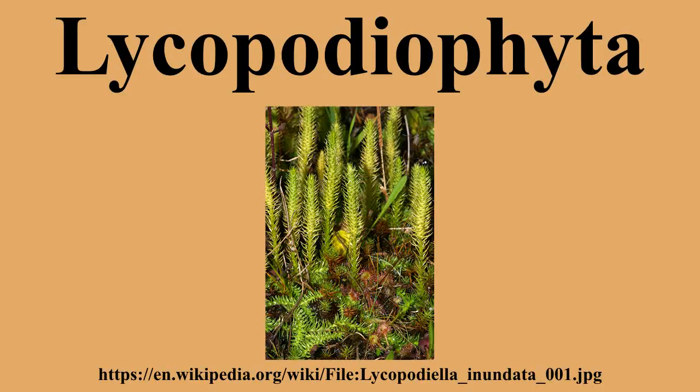There are around 1,290 living species of Lycopodeophyta, which are generally divided into three extant orders, in addition to extinct groups. There is some variation in how the extant orders are grouped into classes. They may be put into a single class, or they may be put into two classes.